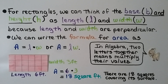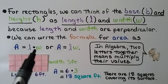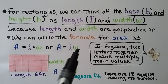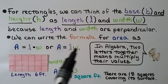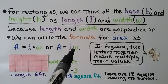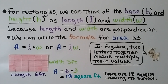For rectangles, we can think of the base B and height H as length L and width W, because length and width are perpendicular. The formula for area can be written as A equals length times width, or simply A equals LW, because in algebra two letters side by side means to multiply their values. For example, with a length of 6 feet and a width of 3 feet, we multiply 6 times 3, giving 18 square feet — there are 18 squares covering its surface.